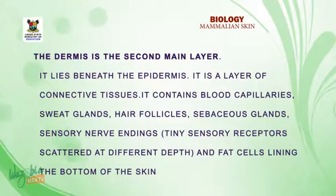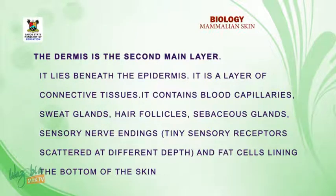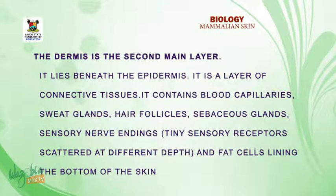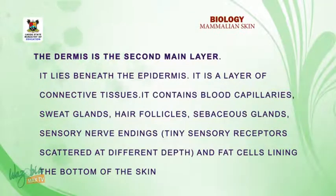The dermis is the second main layer. It lies beneath the epidermis. It is a layer of connective tissue. It contains blood capillaries, sweat glands, hair follicles, sebaceous glands, sensory nerve endings or tiny sensory receptors located at different depths, and flat cells which line the bottom of the skin.